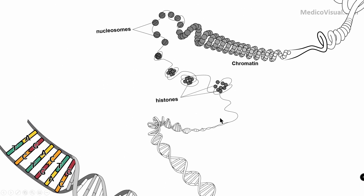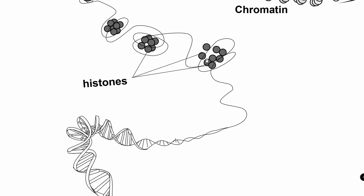This double helical DNA interacts with histone proteins. Histones are positively charged proteins because they have an abundant amount of basic amino acids. DNA is negatively charged because of the phosphate groups present on it. This negatively charged DNA interacts with the positively charged histone proteins.